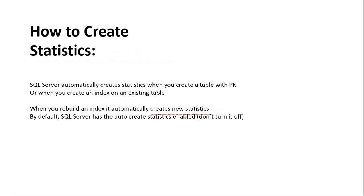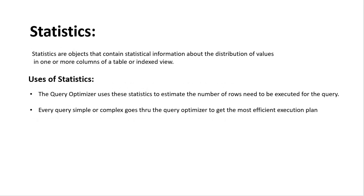SQL Server automatically creates statistics when you create a table with a primary key, when you rebuild an index, and when you create any index — clustered or non-clustered. By default, it will automatically update the statistics unless you turn it off. I'll show you in the demo where to check whether statistics is on or off in the database.